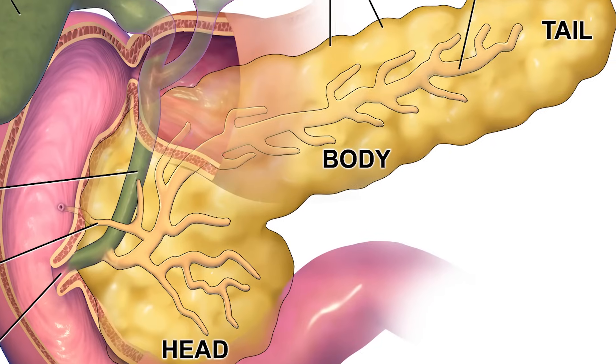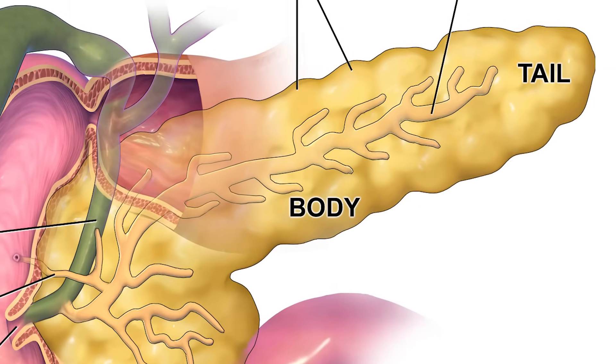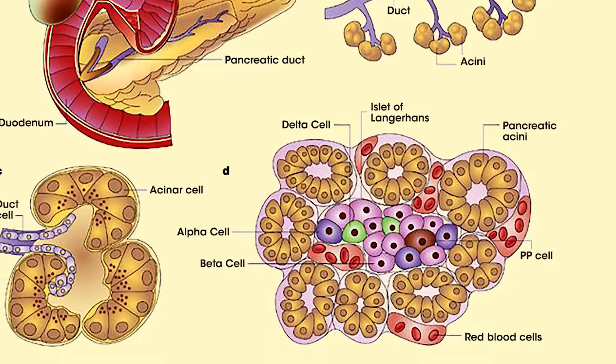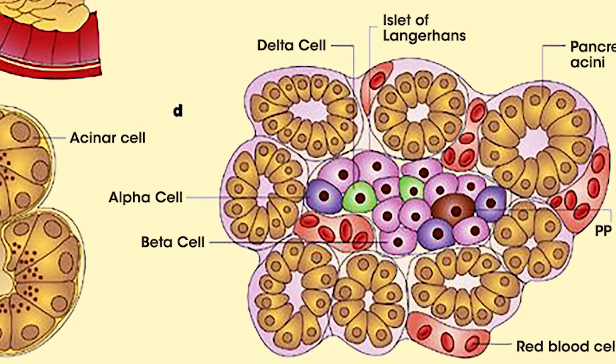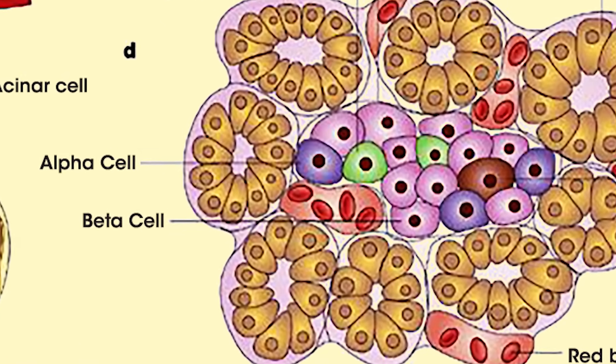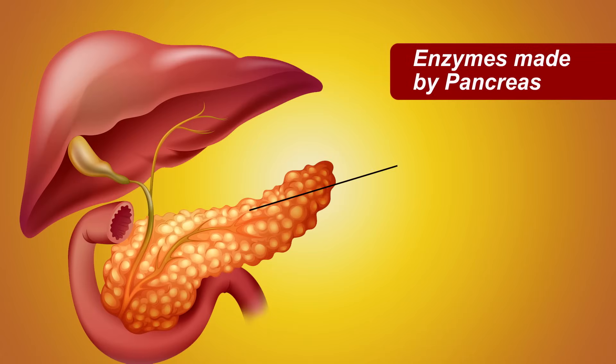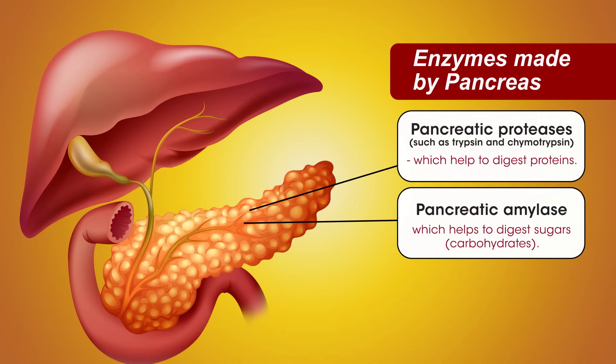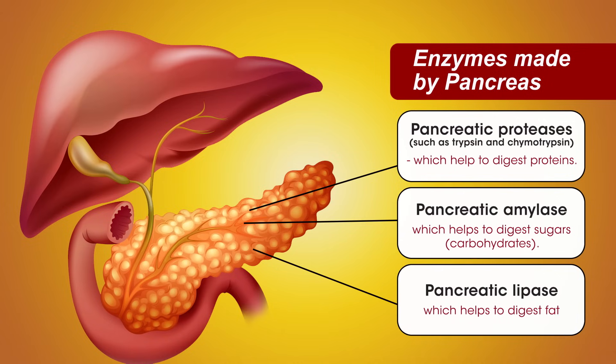The pancreas has three parts: the head, the body, and the tail. In the tail of the pancreas, there are beta cells of Langerhans which secrete a hormone called insulin. And we all know insulin takes an important part in glucose metabolism. Lack of this hormone, insulin, causes diabetes.